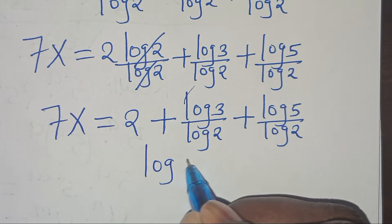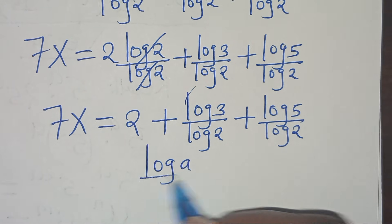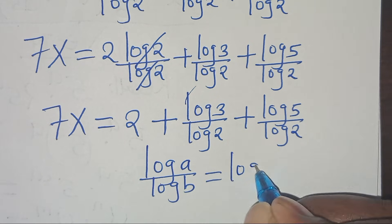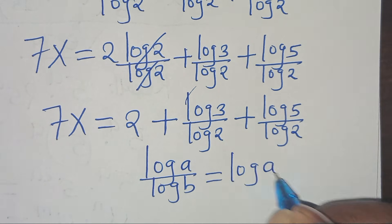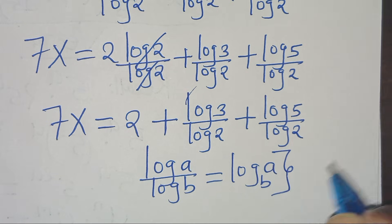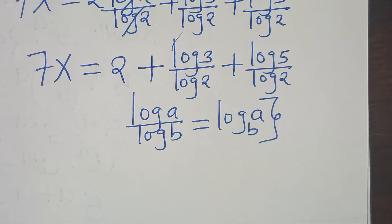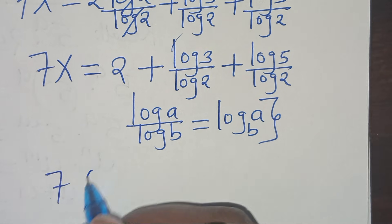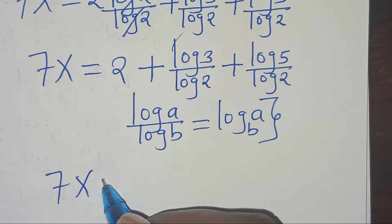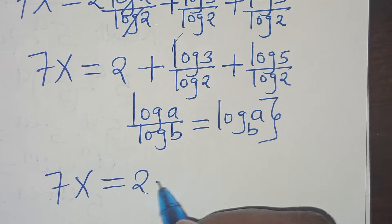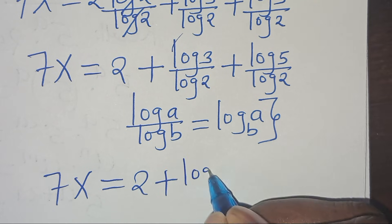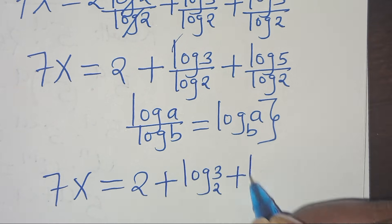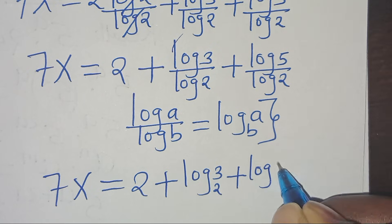Each of these terms is in the form of log a over log b, which we can express as log a to base b. Applying this change of base property, we have 7x equals 2 plus log 3 to base 2, plus log 5 to base 2.